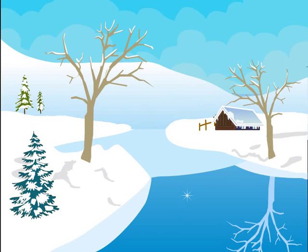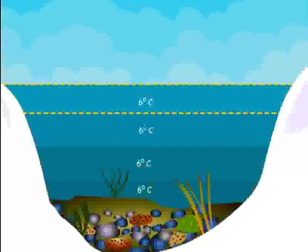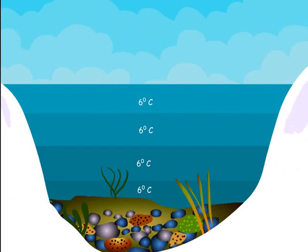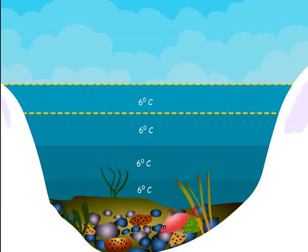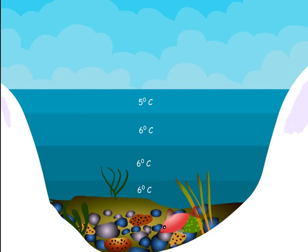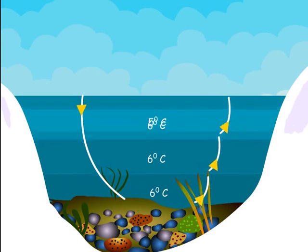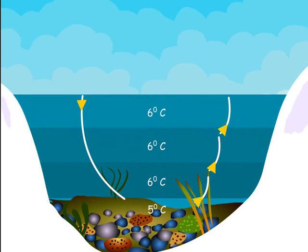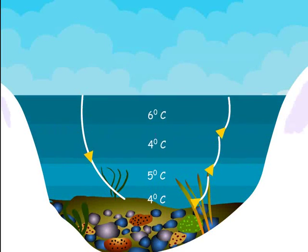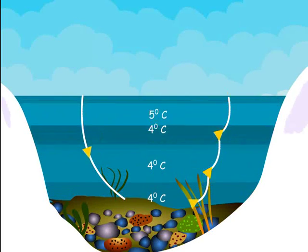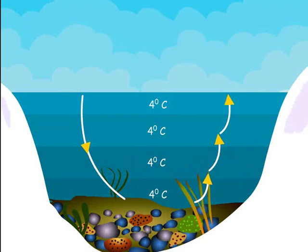During winter season, as the temperature of water decreases, water at the surface of lakes, rivers, sea, etc. starts contracting. That is, its volume decreases and density increases. Hence it sinks to the bottom. This process continues until the temperature of all the water in a lake falls to 4 degrees Celsius.